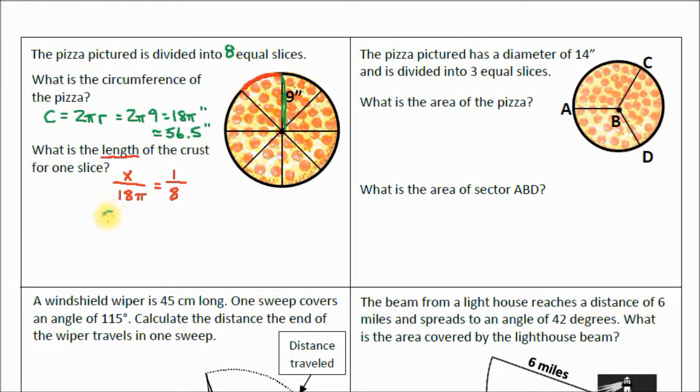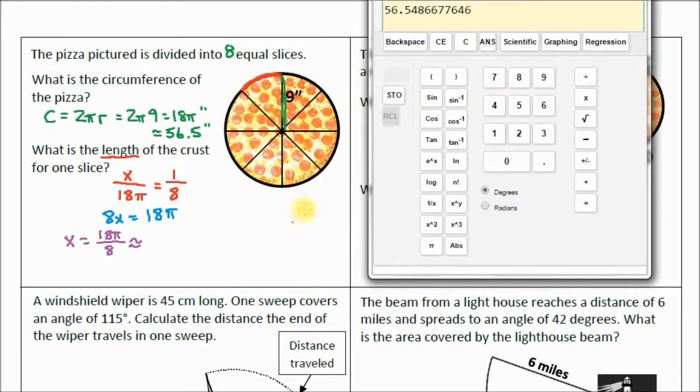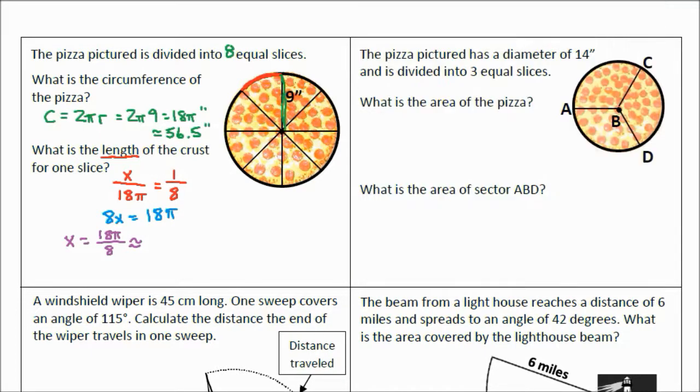Alright, let's cross multiply. This is 8 times x equals 18π times one. That's just 18π. I'm going to divide both sides by eight. And you're going to end up with x equals 18π over 8. Let's go ahead and put that in our calculator. 18π over 8 is our exact answer. Let's find our estimated answer. 18π divided by 8 equals 7.06 or 7.1. About 7.1, and this is a length, so it's just going to be inches, 7.1 inches.